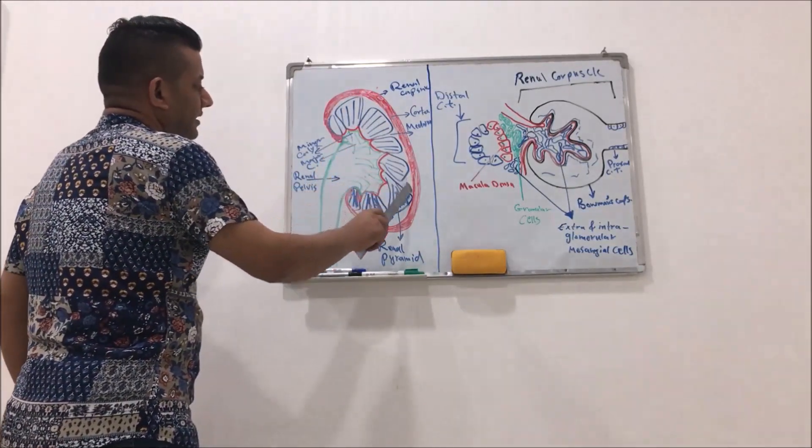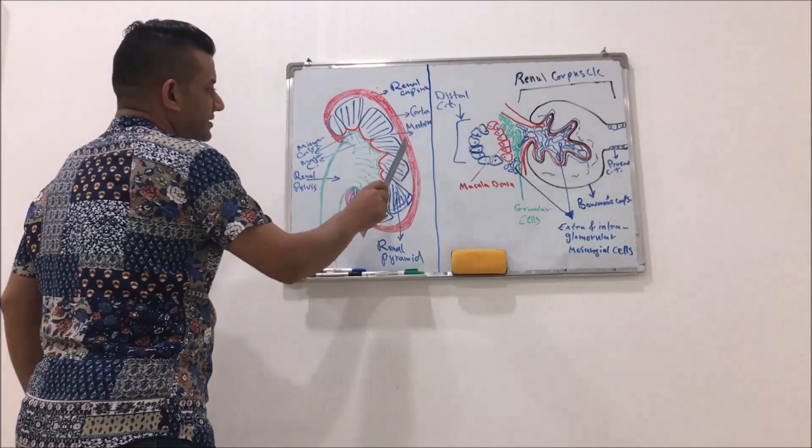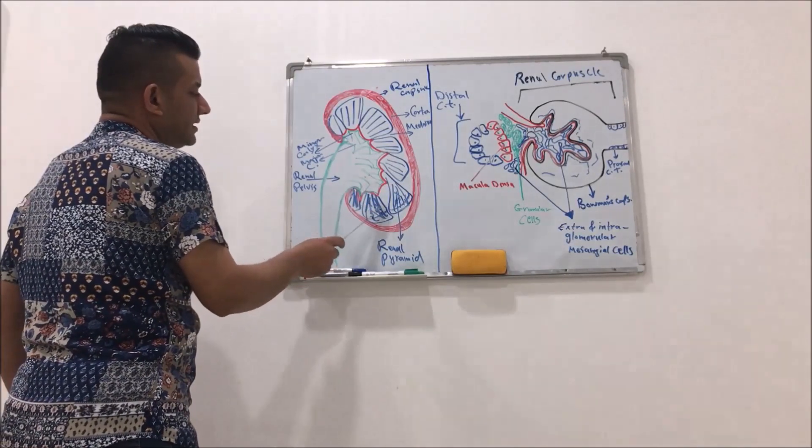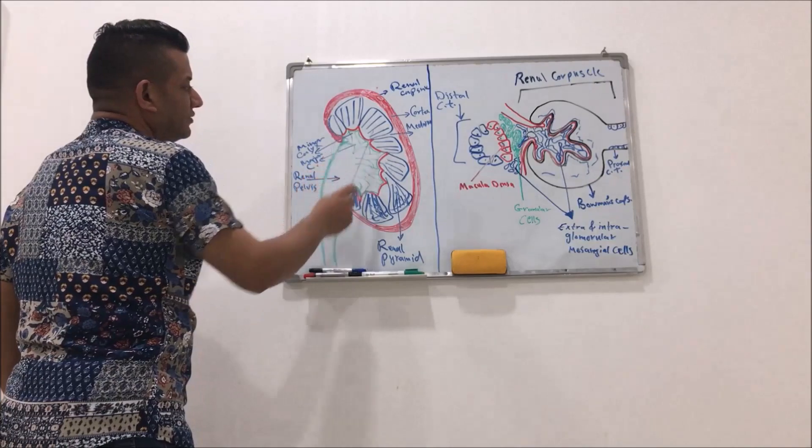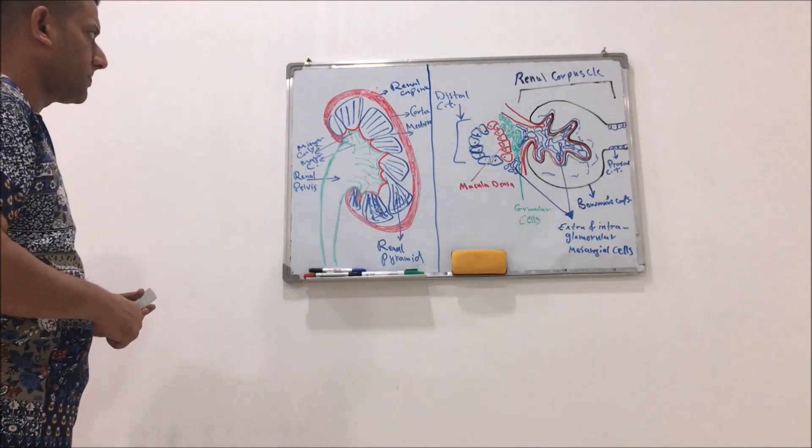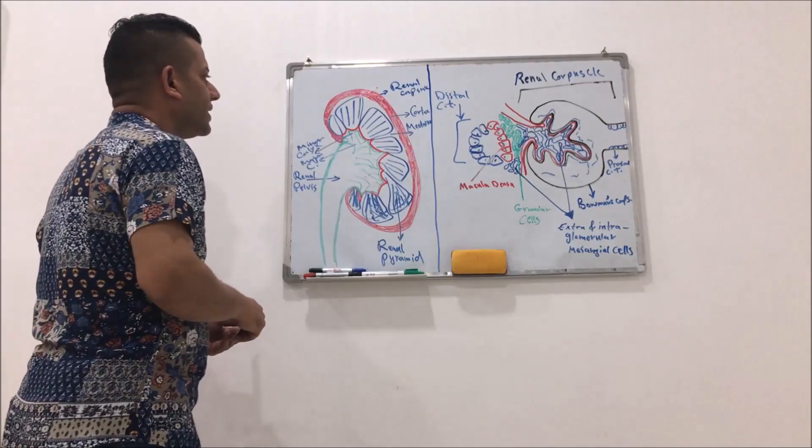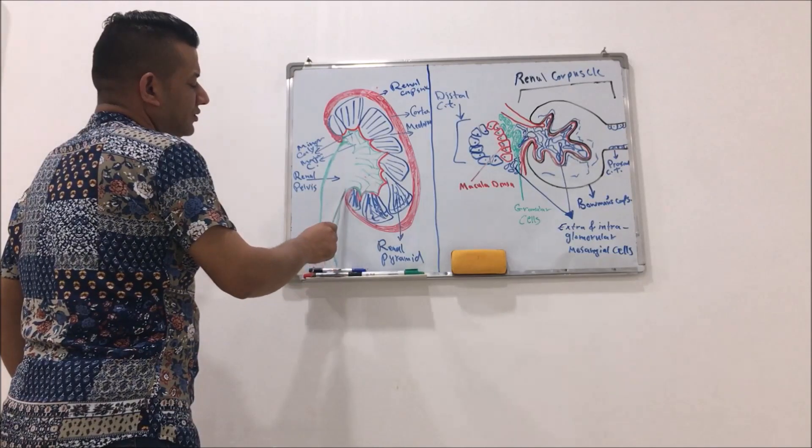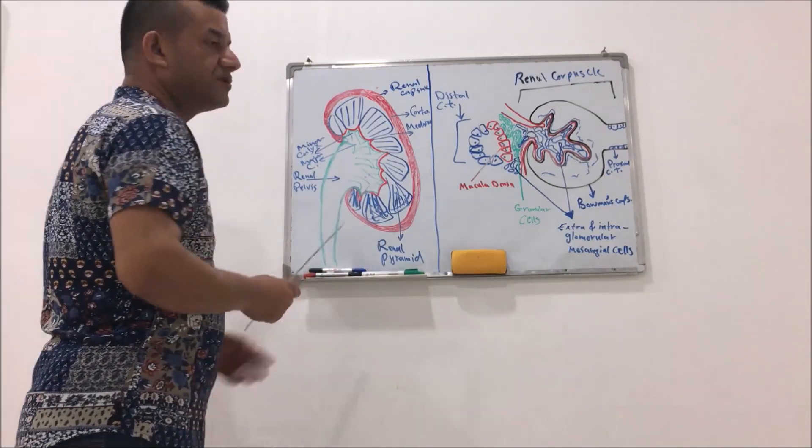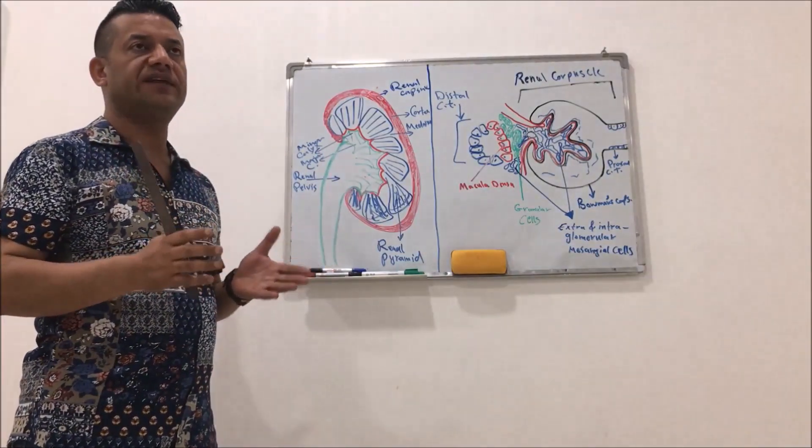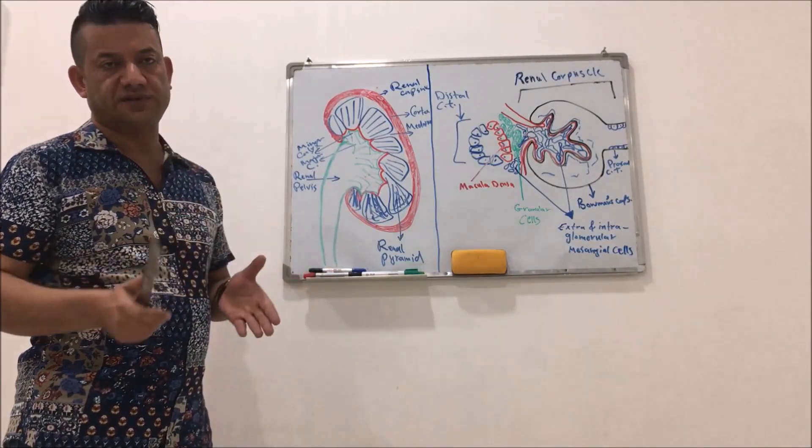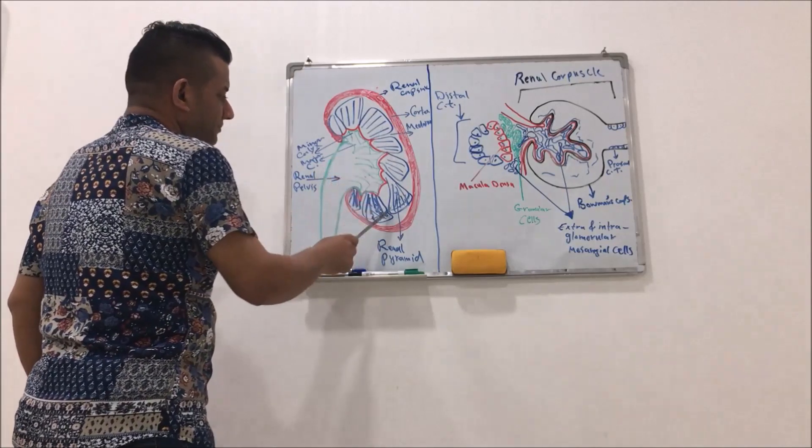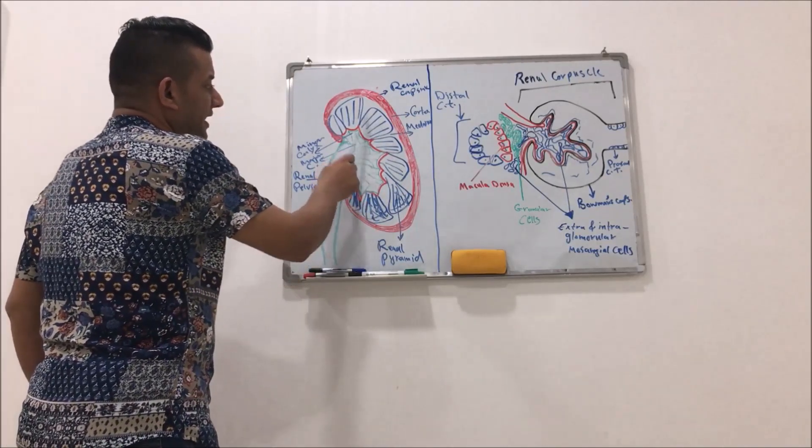The first area beneath the capsule is the renal cortex, while the second area is the medulla. The renal cortex contains the most important functional units of the kidney which are the nephrons. While the renal medulla contains specialized tissue.